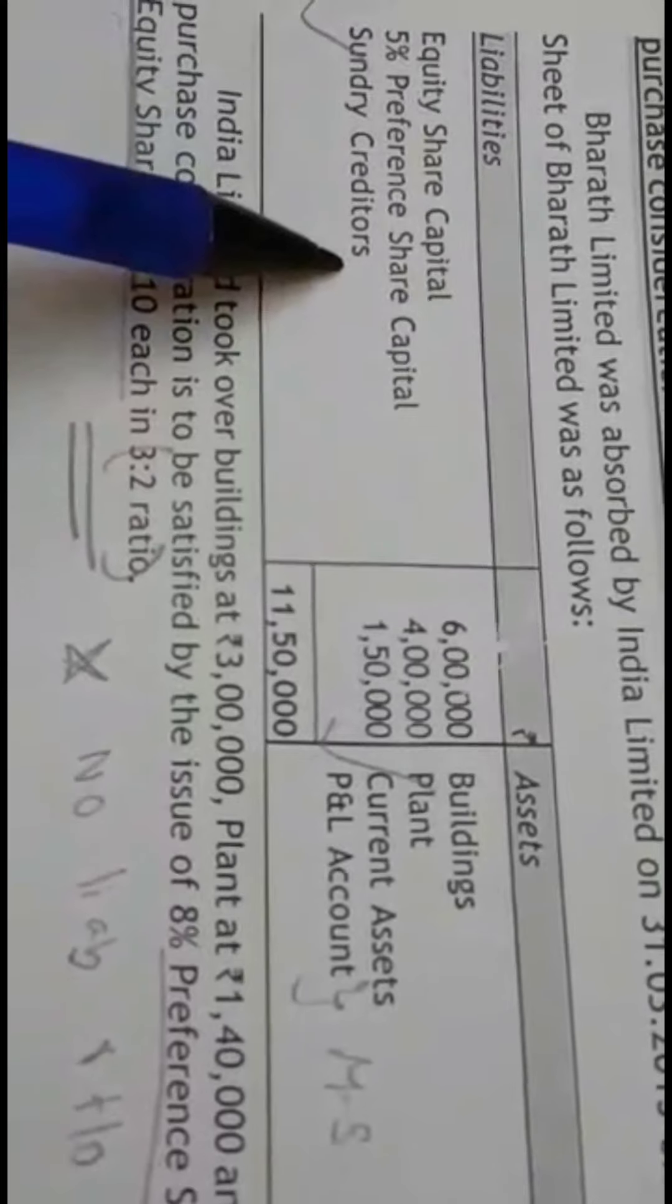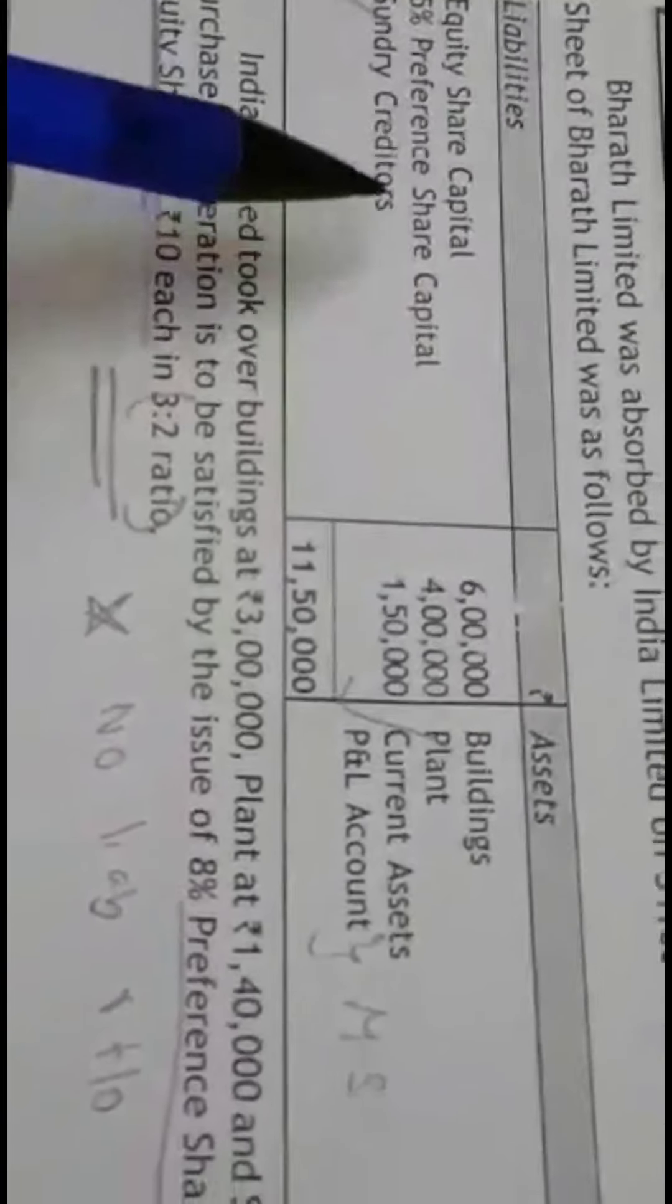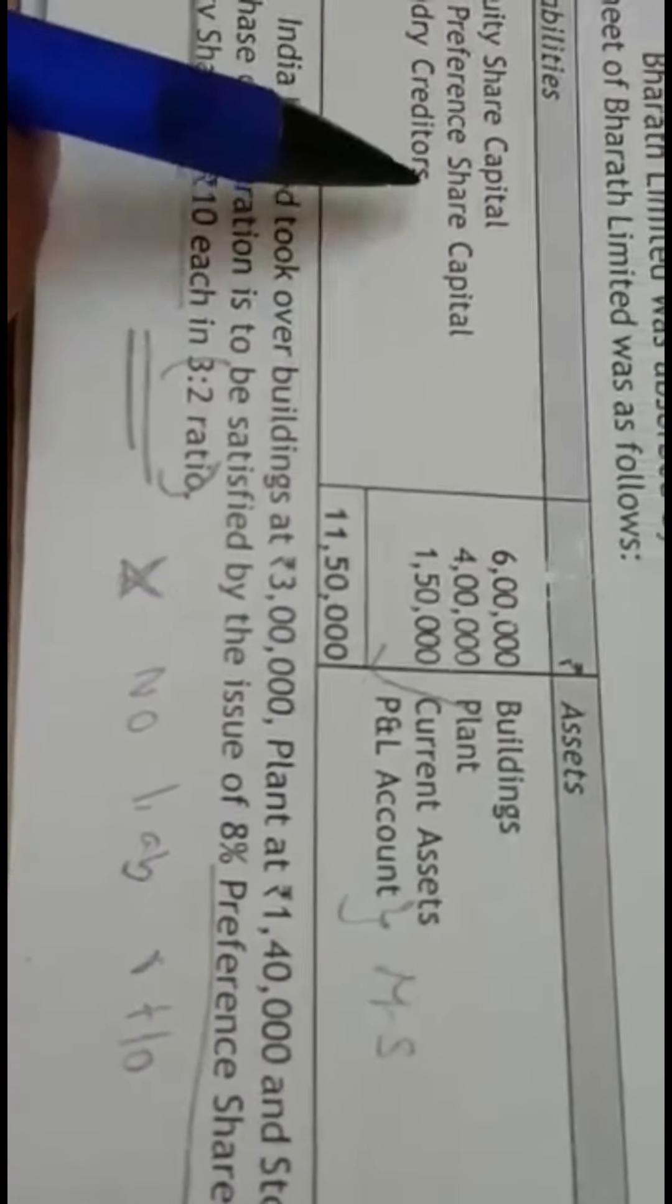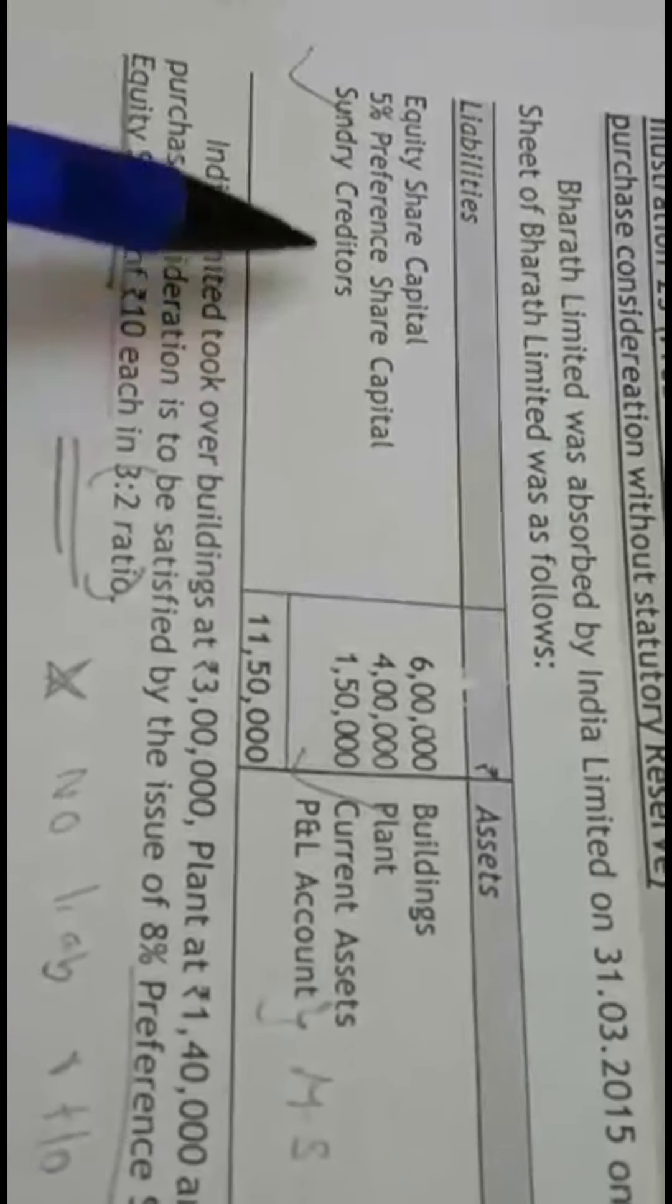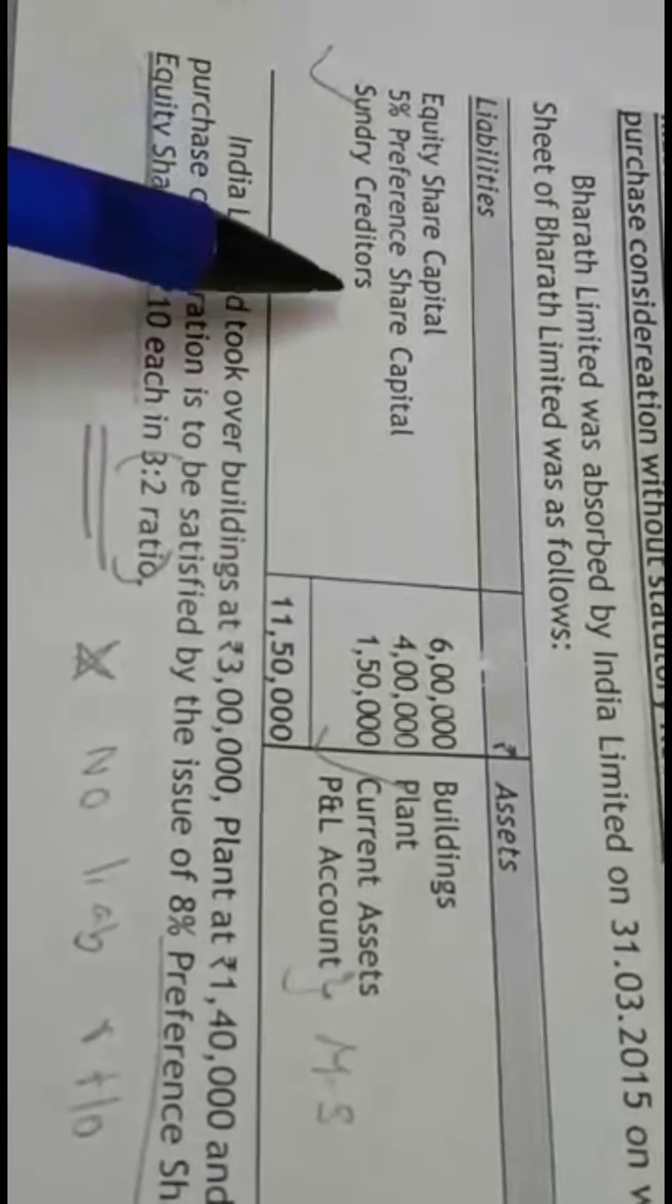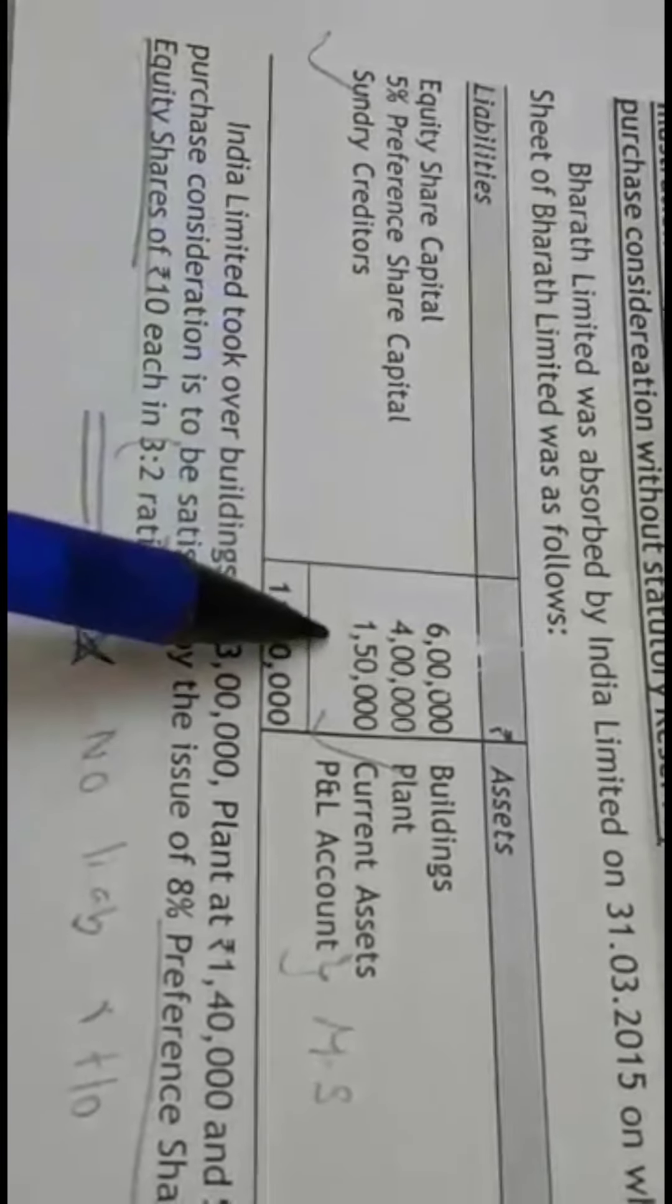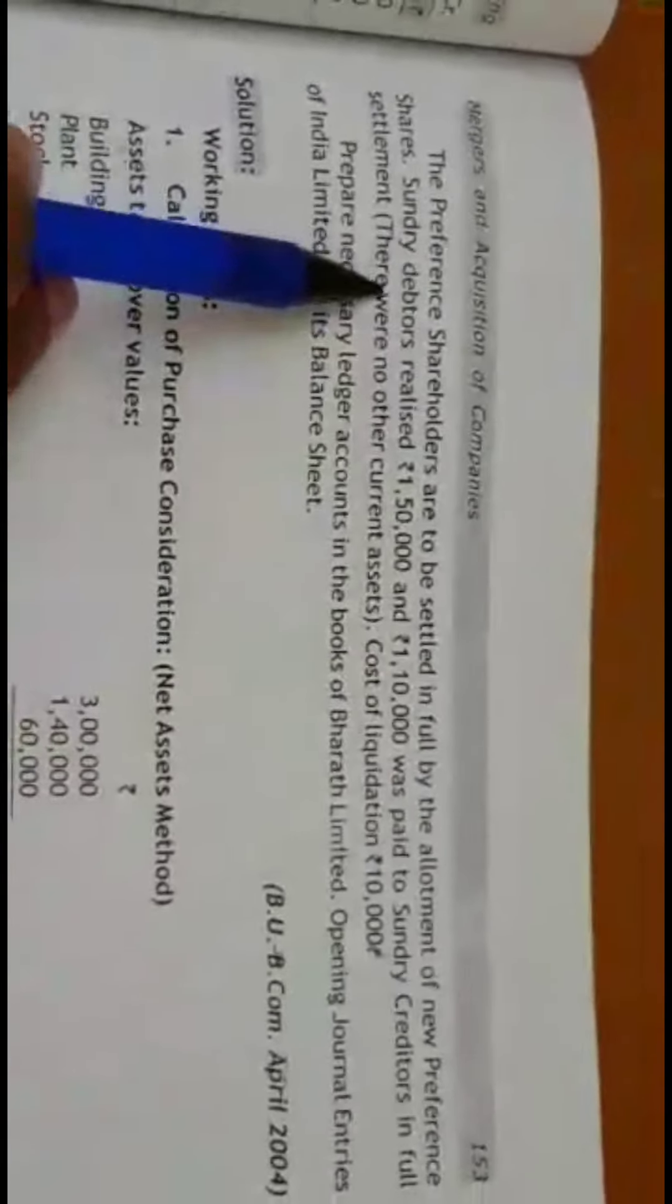Look into the balance sheet. The only liability that you have is sundry creditors, which means the sundry creditors are not taken over, which has to be paid by transferor company. You have to account for in realization account. The general entry would be realization account debit to cash account for the amount paid to sundry creditors.